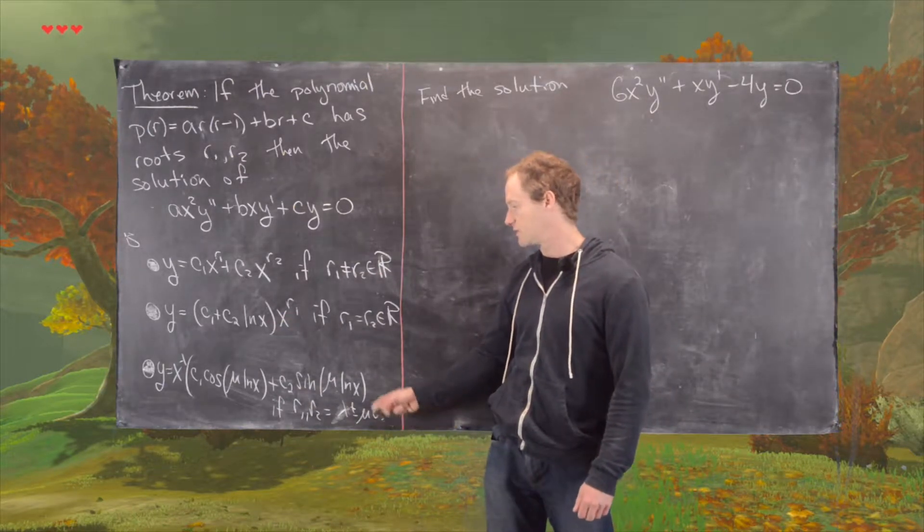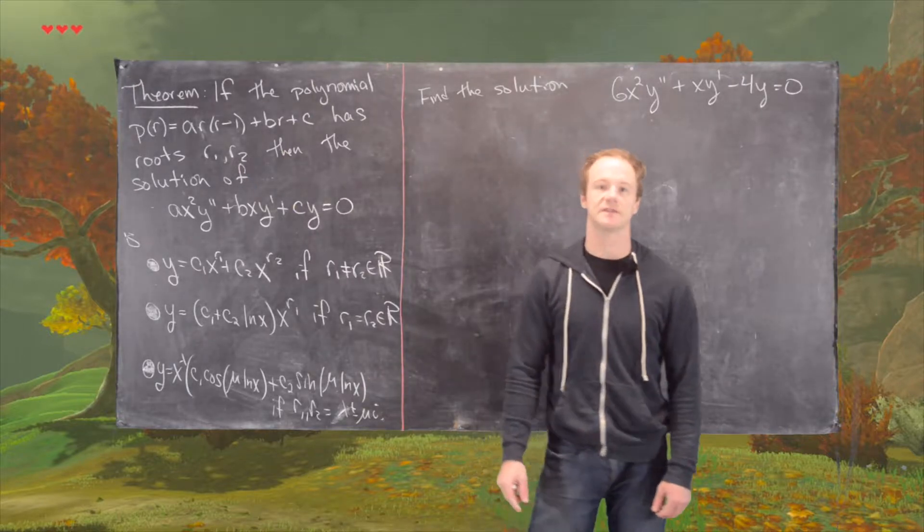And finally, if you have complex conjugate roots, then you have this solution that involves sines and cosines.